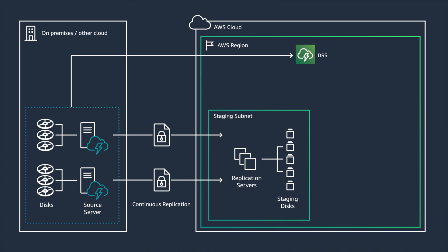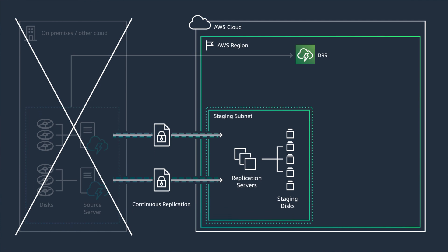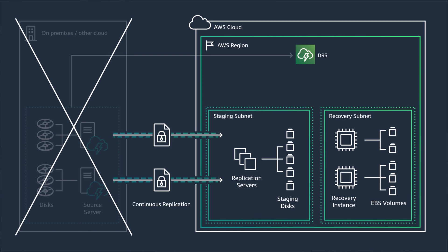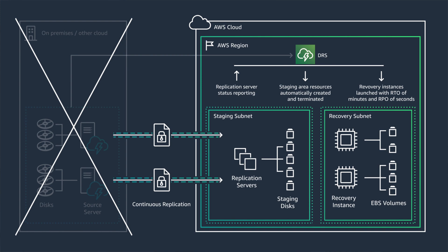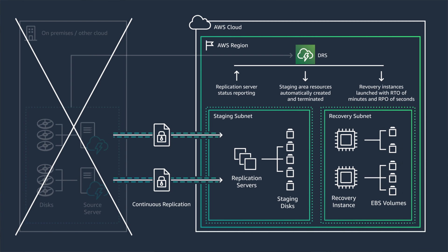When you experience a failure, DRS uses the staged resources to automatically create a full capacity environment in a target VPC. You can launch recovery instances on AWS in minutes, using a desired point in time. When your primary site is up and running again, you can use DRS to fail back to your primary site and stop paying for the resources in AWS.